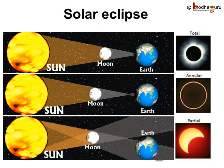And if the Sun is only partially blocked off, it is called as Partial Solar Eclipse.